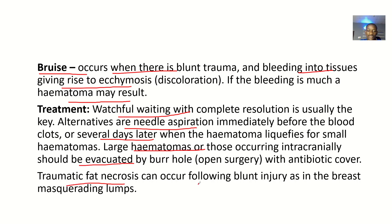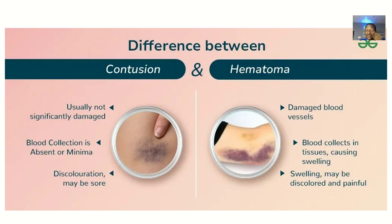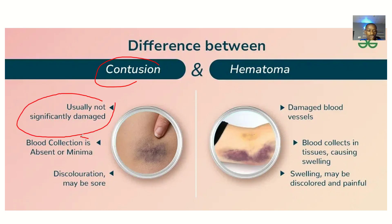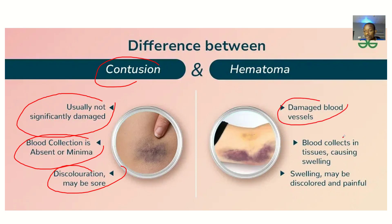Traumatic fat necrosis can occur following blunt injury, as in breast masquerading lumps. Moving on to the differences between contusion and hematoma: in a contusion, tissue is usually not significantly damaged, blood collection is absent or minimal, and discoloration may be present. In a hematoma, there are damaged blood vessels, blood collects in tissues causing swelling, which may be discolored and painful.